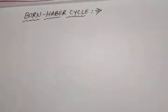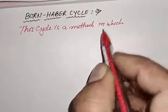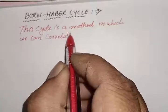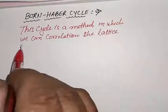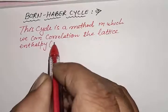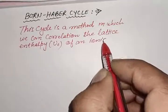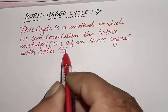Next is the Born-Haber Cycle. What is the Born-Haber Cycle? It is a method in which we can correlate the lattice enthalpy of an ionic solid with other thermodynamic data. So this cycle is a method in which we can correlate the lattice enthalpy of an ionic crystal with other thermodynamic data.